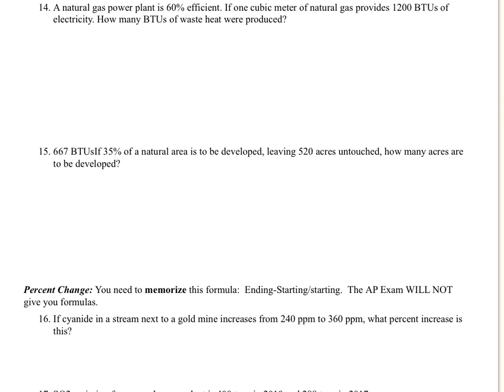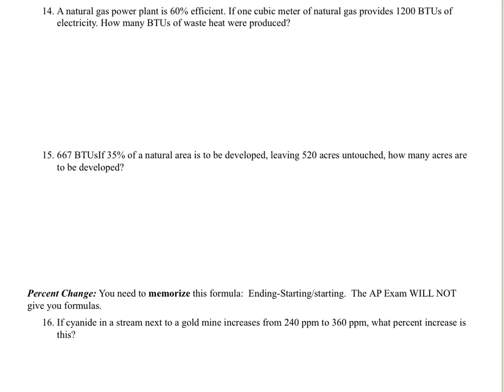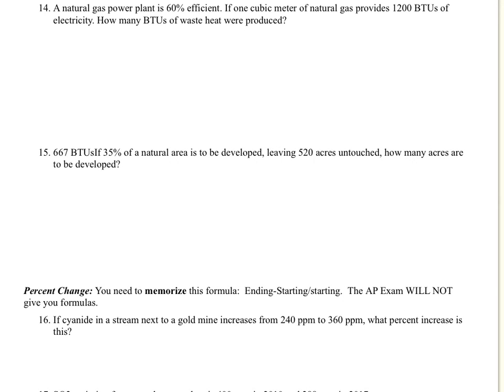APES Mathematics Review starting with number 14. A natural gas power plant is 60% efficient. If one cubic meter of natural gas provides 1,200 BTUs of electricity, how many BTUs of waste heat were produced? So what we're trying to figure out is the waste heat.